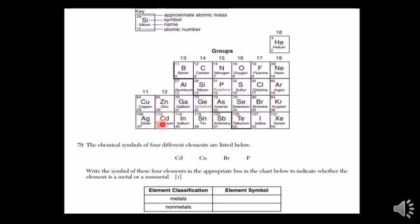Cadmium is on the metal side, so we'll classify it as a metal. Copper is also on the metal side, so it's a metal too.